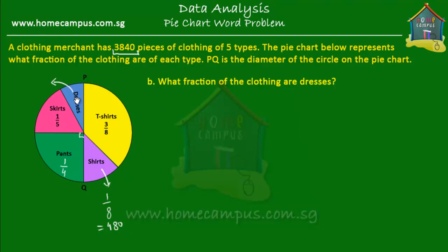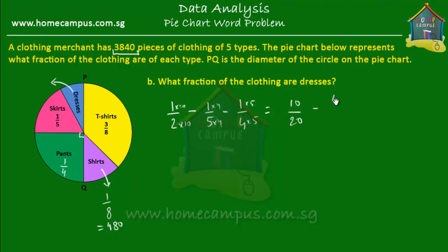To find the fraction that are dresses, we calculate one half minus one fifth (skirts) minus one quarter (pants). The common denominator is 20, so that's 10 over 20 minus 4 over 20 minus 5 over 20. Ten minus four minus five equals one, so the fraction of clothing that are dresses is 1 out of 20. That means if the pie were cut into 20 equal pieces, one piece would represent the dresses.